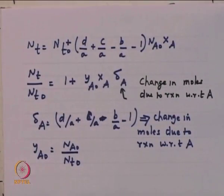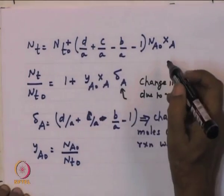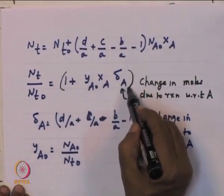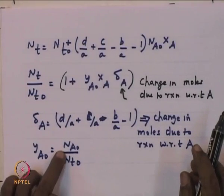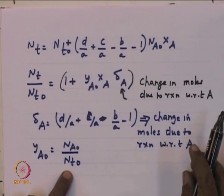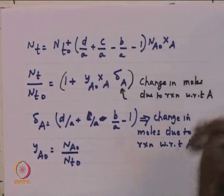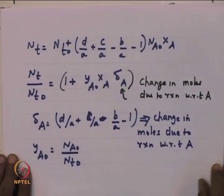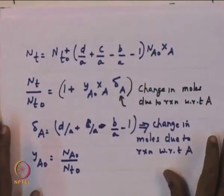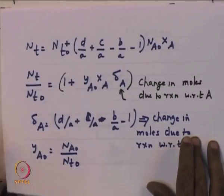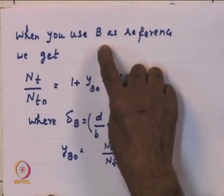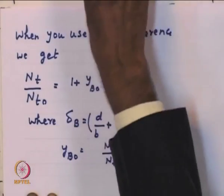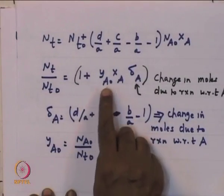From stoichiometry, given a conversion X_A, N_T/N_T0 = 1 + y_A0·X_A·δ_A, where y_A0 is the mole fraction of component A at the start and δ_A is the change in moles due to reaction with respect to component A. This tells us the number of moles at any conversion. What we have done with respect to component A can be done with any other component B, C, or D. If you chose B as the reference, X_B = (N_B0 − N_B)/N_B0, which may differ from X_A.